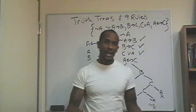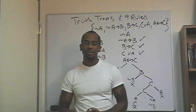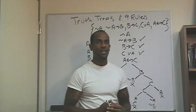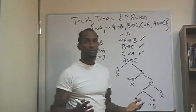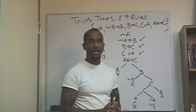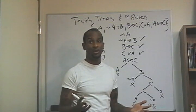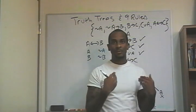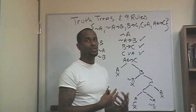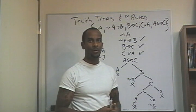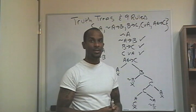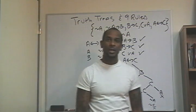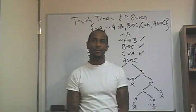That concludes the discussion on truth trees and the application of statement logic within sets. Every branch closed — this A, this not B, these A's, and this not C — confirming the set is inconsistent. I hope this has been informative. You can use truth trees to apply to many different forms of argument and argument analysis. Thank you for watching. I'm Dr. Jason J. Campbell. Goodbye.